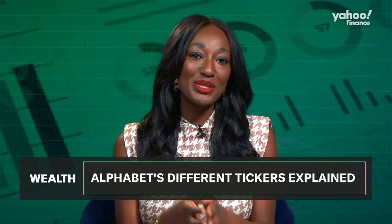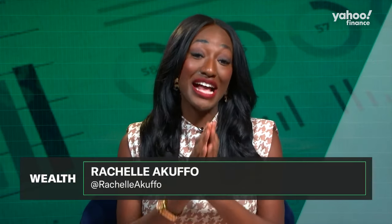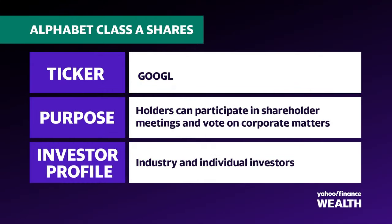That's right, Ali. So Google's parent company, Alphabet Inc., offers three classes of shares, each with different levels of voting power and ownership structure. First, you have Class A shares — they have the ticker GOOGL, G-O-O-G-L. That gives you voting power of one vote per share. In terms of purpose, investors can participate in shareholder meetings and vote on corporate matters, for example, electing board members. The typical investor profile is institutional and individual investors who want a say in the company's governance.